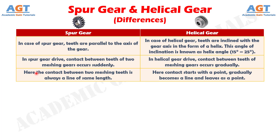Difference number 3: In spur gear drive, the contact between two meshing teeth is always a line of the same length, whereas in helical gear drive, contact starts with a point, gradually becomes a line, and leaves as a point.